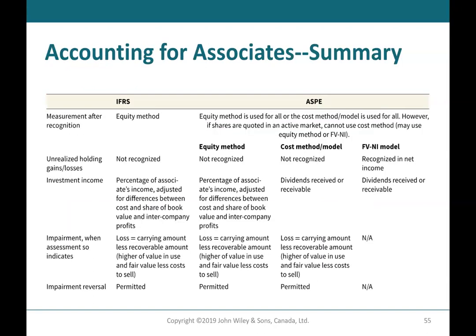Accounting for Associates — Summary: under IFRS, after recognition, the equity method is used. Under ASPE, the equity method or cost method is used for all significant influence investments; however, if shares are quoted in an active market, the cost method cannot be used — the equity method or fair value through net income must be used instead. Unrealized holding gains and losses are not recognized under the equity method or cost method, but are recognized in net income under the fair value through net income model. Under the equity method, income reflects the percentage of the associate's income adjusted for differences between cost and share of book value and intercompany profits.